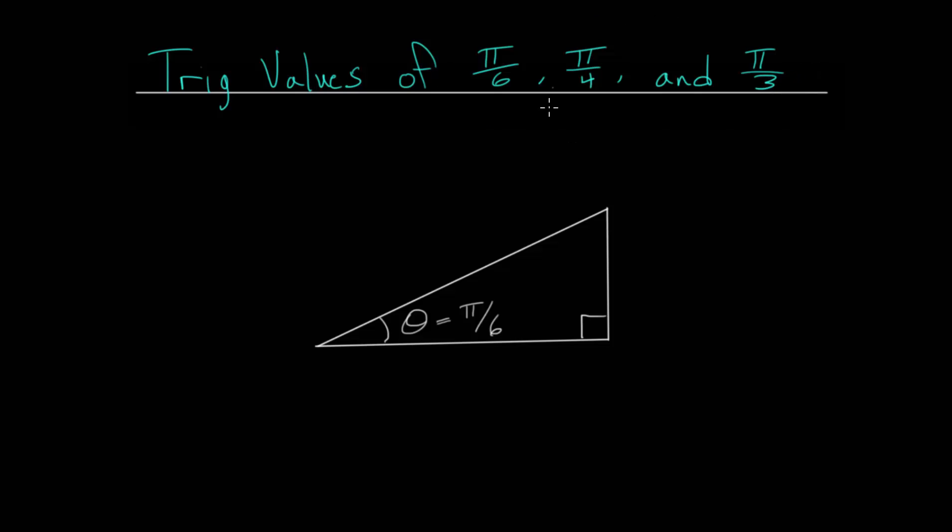Specifically, we want to look at what happens when we plug these angles into the sine, the cosine, and the tangent functions. Since these are angles that show up quite frequently, and these angles simplify to triangles that we've studied before in geometry, these are going to be the special right triangles.